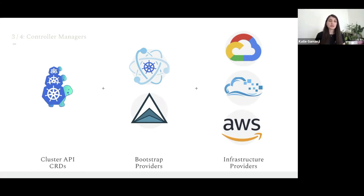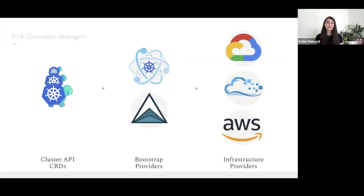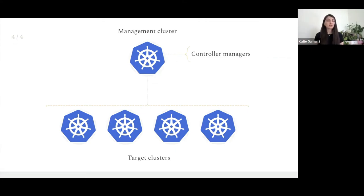Cluster API introduces five new custom resource definitions, and we require a controller for each to add, remove, or reconcile changes. The bootstrap provider translates YAML configuration into cloud init script and adds the instance to the cluster as a node — currently supported by kubeadm and Talos. The infrastructure provider controllers interact with the cloud provider API and provision resources such as instances, VPCs, subnets, and security groups. Once controller managers are running, we can provision our target clusters — the clusters delivered to engineering teams and consumed by customers.